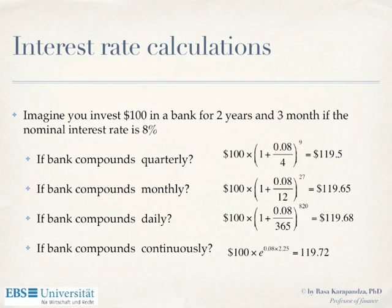If you do everything monthly, the monthly rate is used and we put it to the power of the number of months — two years and three months is 27 months. The same goes for daily and continuous compounding, and every time we get a completely different number.